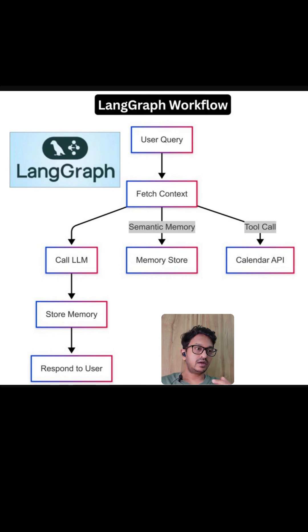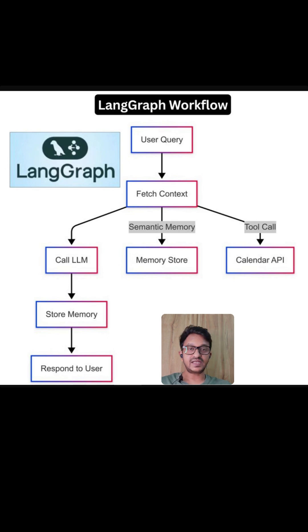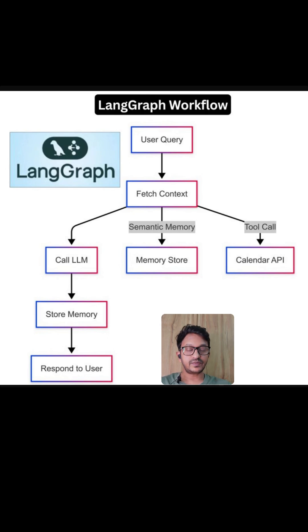It retrieves user preferences — such as tone, grammar type, personality — and the calendar data. Then it processes that with an LLM, using it to draft the email based on the context and tone provided. The next step is to save the interactions as episodic memory for future references.